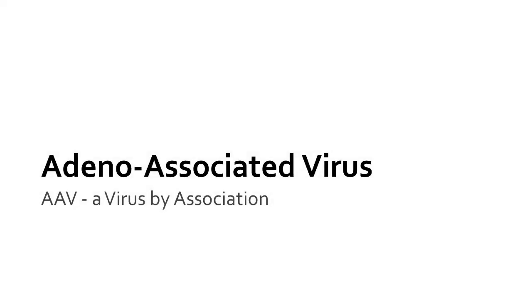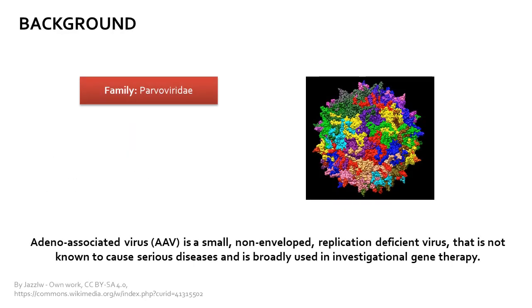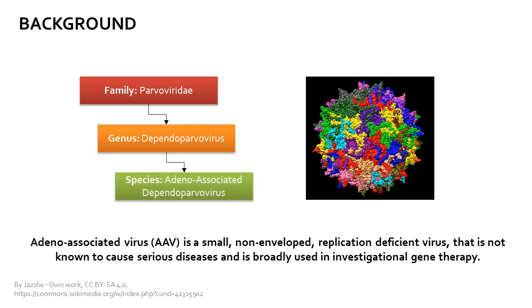Hello everyone and welcome to General Microbiology. Today we'll be discussing the adeno-associated virus, a small, replication-deficient virus of nevertheless significant importance. The adeno-associated virus, or AAV, is a member of the Parvoviridae family. It belongs to the genus of dependoviruses, or specifically the dependo-parvoviruses, comprising a species of non-enveloped, replication-deficient viruses that are generally not known to cause disease in humans, and that have, at least in part because of their low pathogenicity, been broadly investigated for application in medicine and gene therapy specifically.